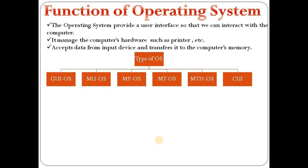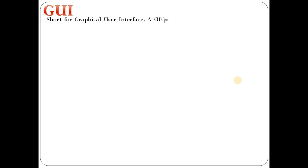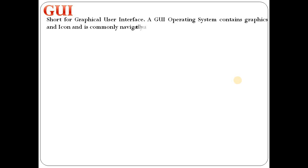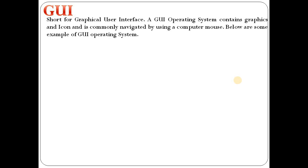Now let's look at the types of operating systems. First is GUI — Graphical User Interface. A GUI operating system contains graphics and icons, and it is commonly navigated by using a computer mouse. Some very common examples of graphical user interface operating systems include Microsoft Windows. These are very popular operating systems based on GUI.